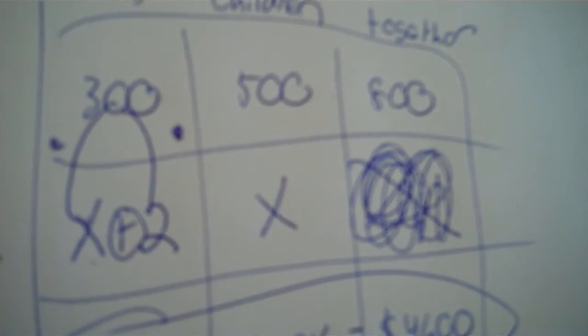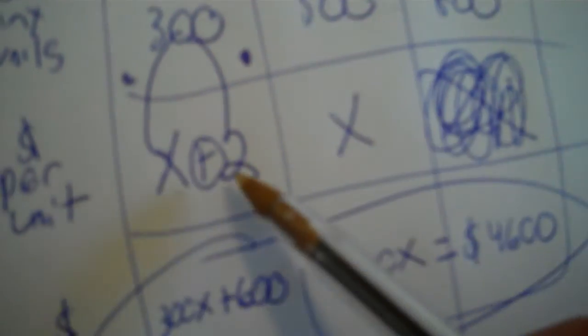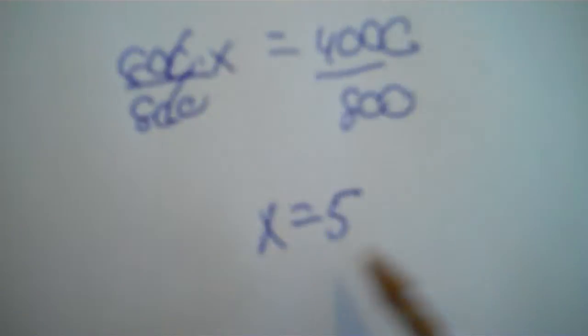Now, which answer is 5? What box has the letter X just all by itself? All by its lonesome. Not there, not there. That has a plus 2. There's X all by itself. Cross it out and put 5. 5 children. Now, how about the adults? Go over to the box right next to it and put 5 in for X because that's your answer, 5. 5 plus 2 is 7.